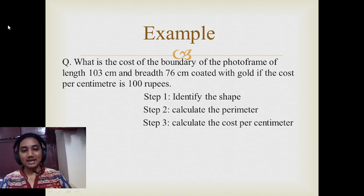Now coming to the example. Here, a photo frame is given with some length and breadth. The boundary is coated with gold color, and its cost per centimeter is given. How to approach this question?